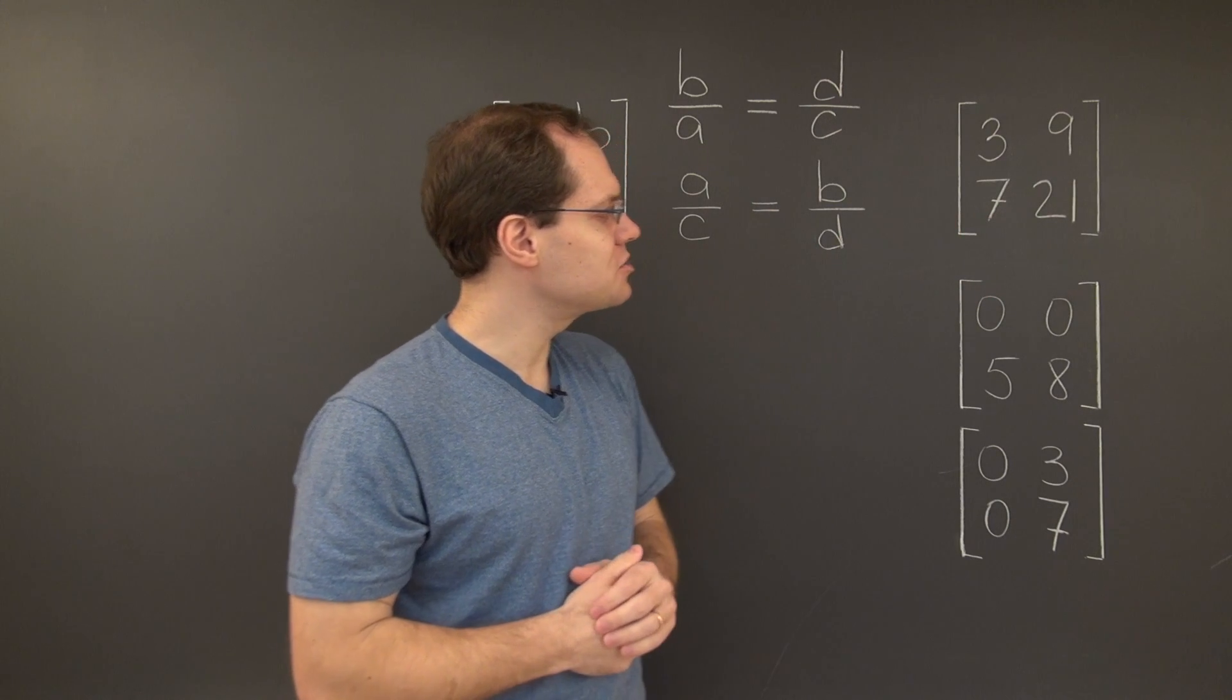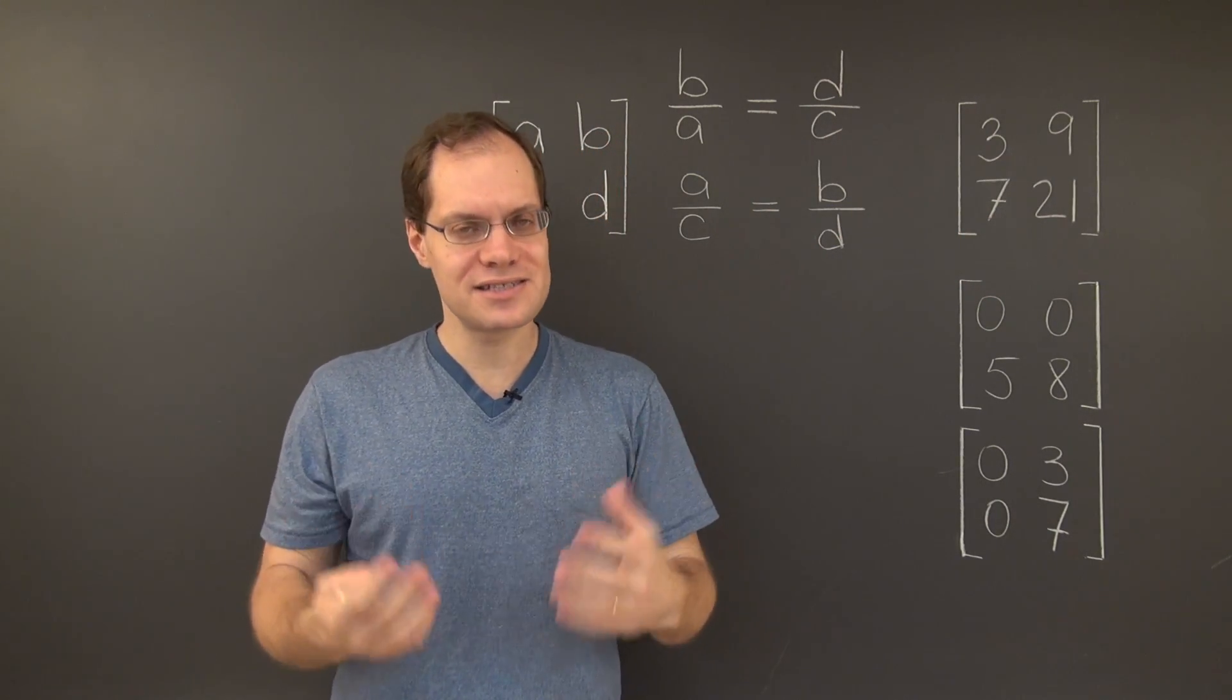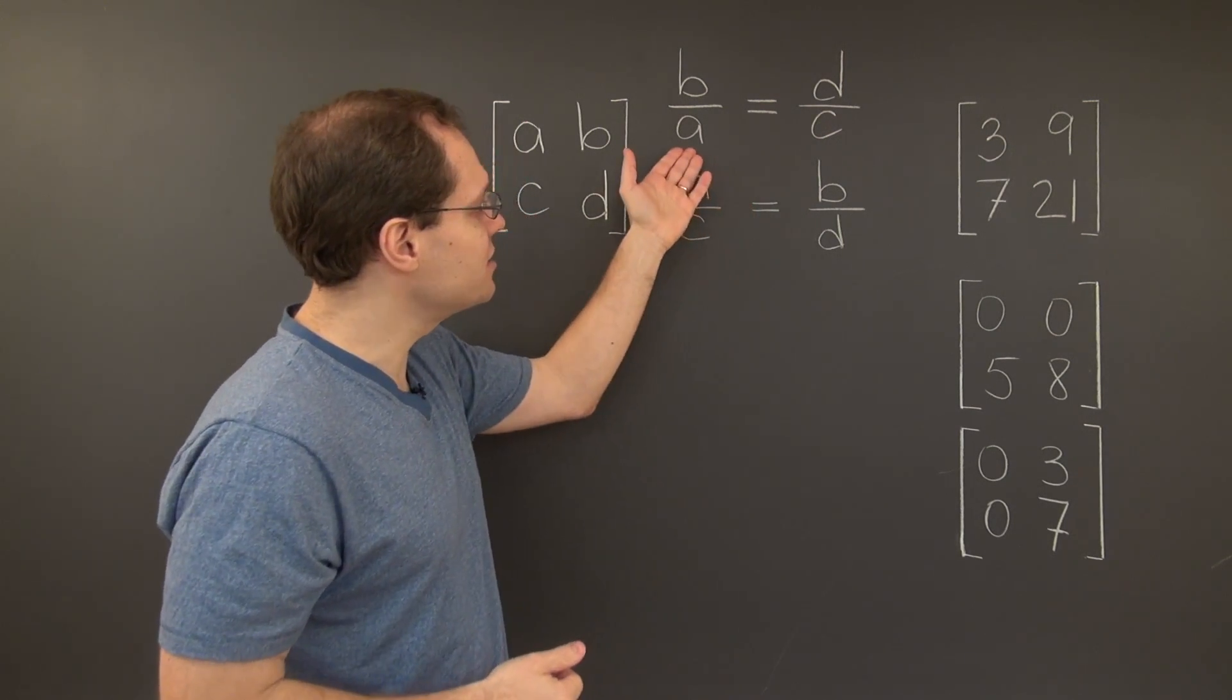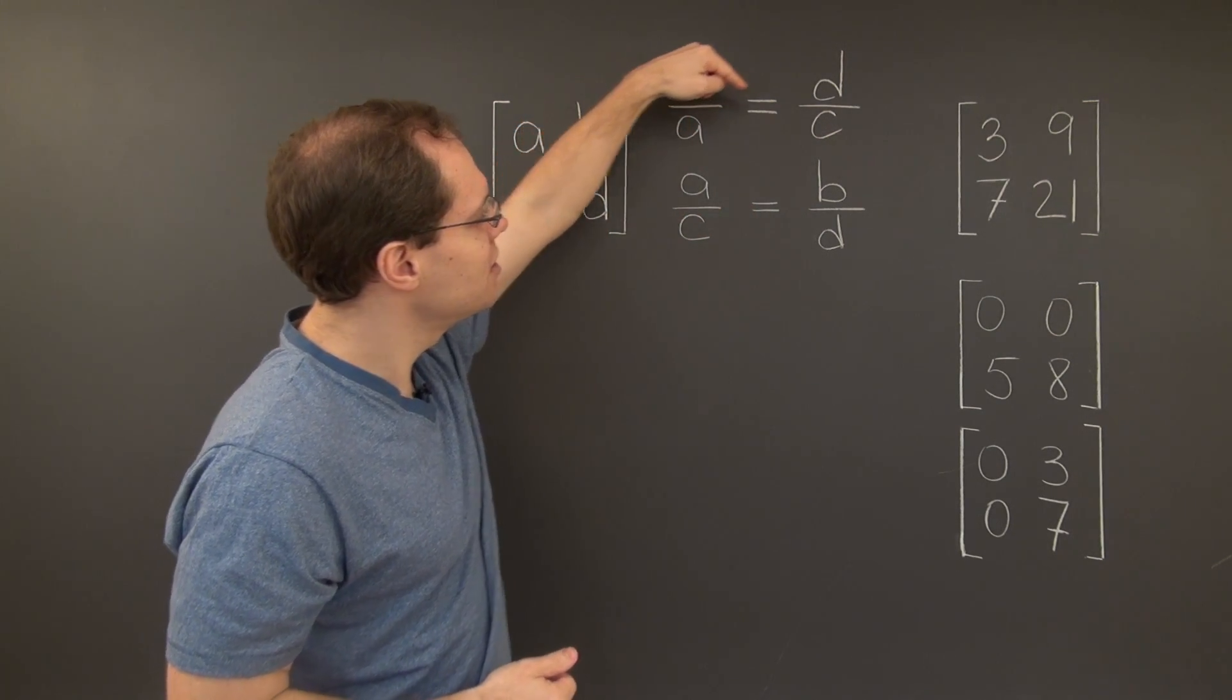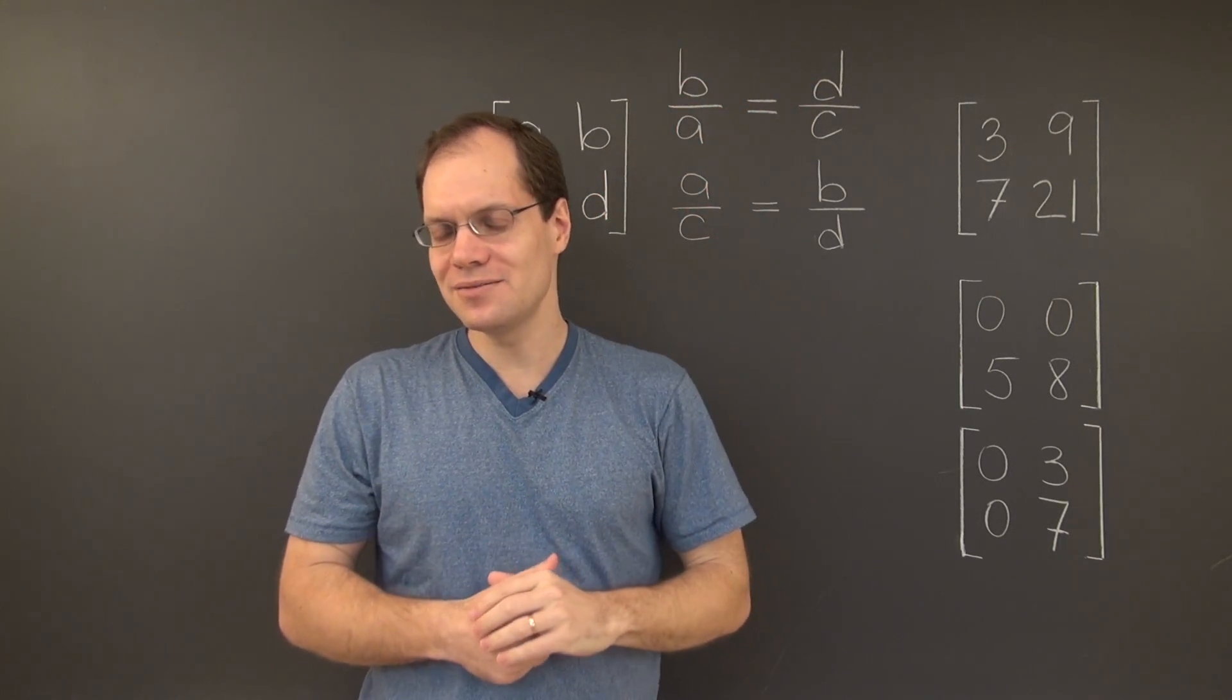If we test this matrix against either one of these criteria, we'll conclude that its columns are linearly dependent. In the first case, we'll have 9 over 3 equals 21 over 7, a match, therefore the columns are linearly dependent.